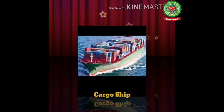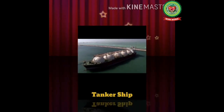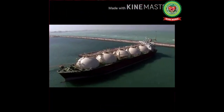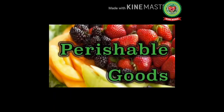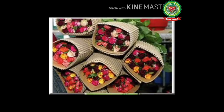Here is the picture of a cargo ship, which is used to carry heavy goods such as food grains from one place to another. Here you can see a tanker ship, which is used to carry oil and petroleum. Food grains and petroleum can thus be moved to far-off places at a cheaper rate. As these ships have cold storage facilities, even perishable goods can be transported. Mark the meaning of perishable goods: goods which spoil easily. Using these ships we can transport food grains, fruits, flowers, oil, and petroleum to different places.